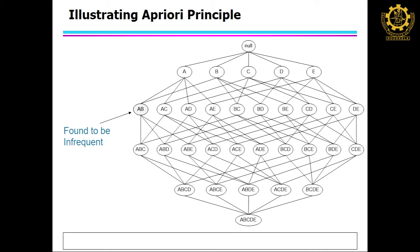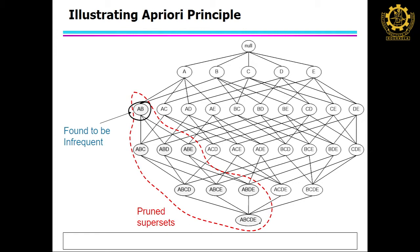The key idea of the Apriori algorithm is: if an itemset is frequent, all its subsets will be frequent. Conversely, if an itemset is not frequent, its superset cannot be frequent either. So if AB is found to be infrequent, any item associated with AB will also be infrequent, because AB itself is infrequent. Adding anything to AB will result in an infrequent itemset. This way we can reduce the number of candidate generations and the search time.